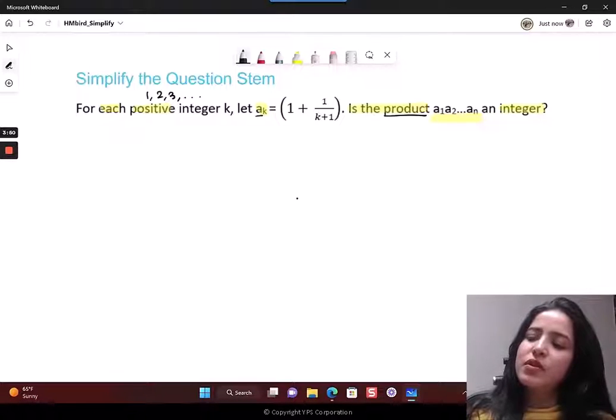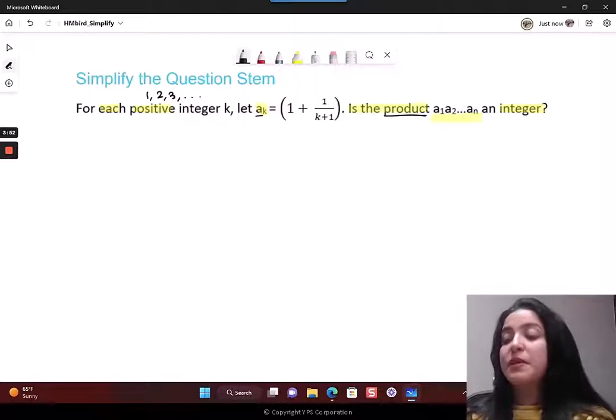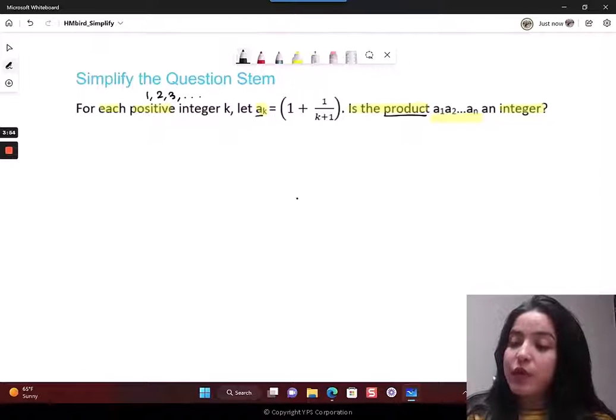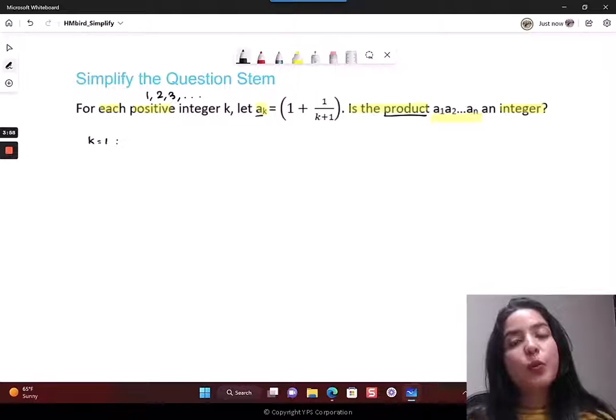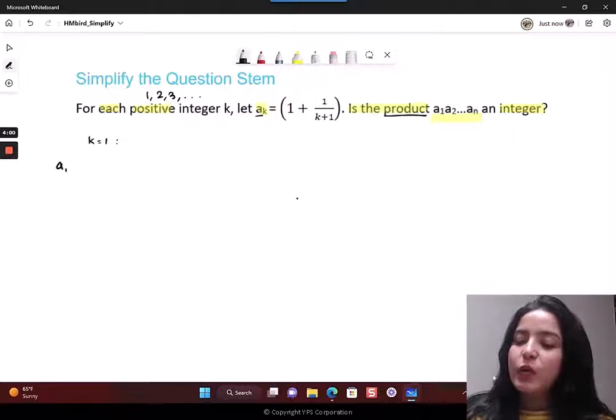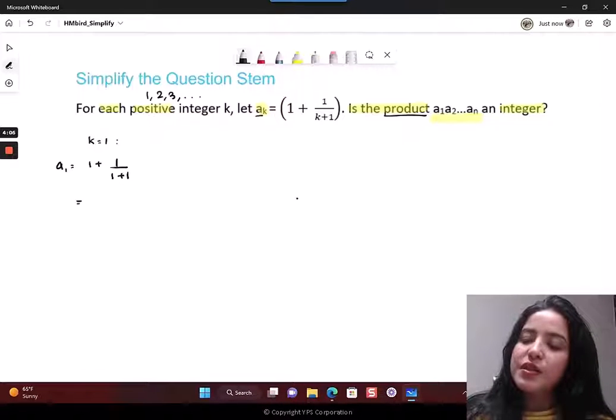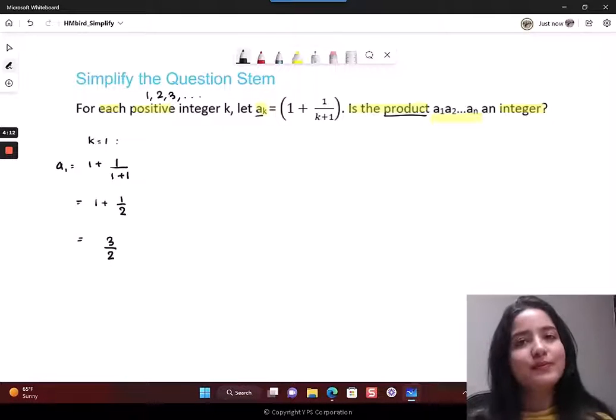So ak is 1 plus 1 upon k plus 1, and k will keep changing for all positive integers. So say I think about k equal to 1 first. The first term is going to be 1 plus 1 upon 2, and if you add this, it's going to be 3 over 2.